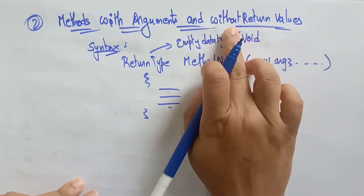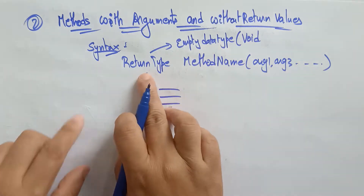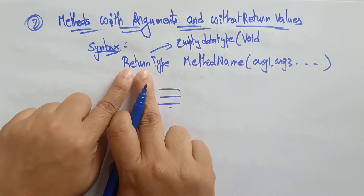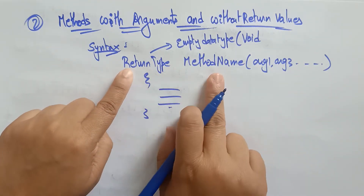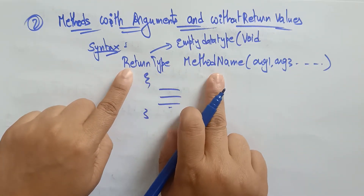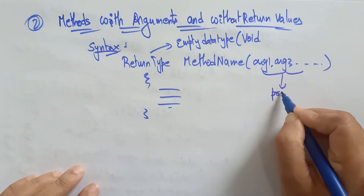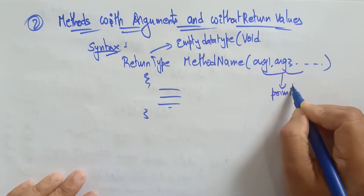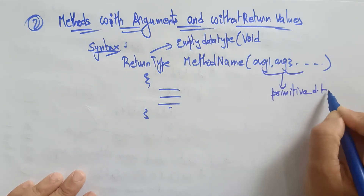Because it is without a return value, without return value means you have to mention void here. Then the method name, and whatever the argument list — you can use either the primitive data types or the reference data types.